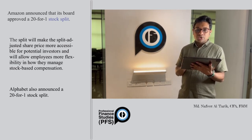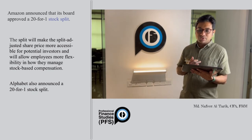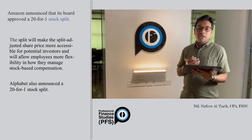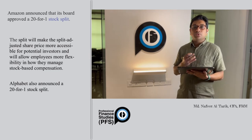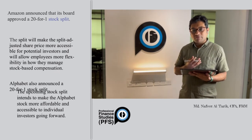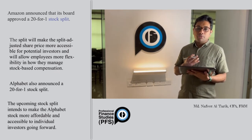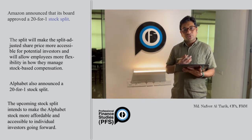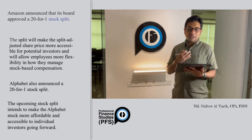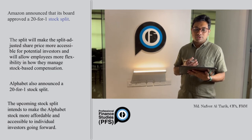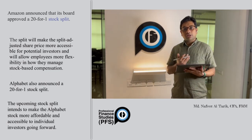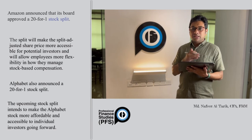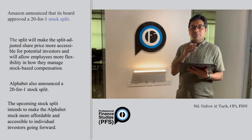Alphabet's per share stock price had increased to the $3,000 level at its peak. The company thought they needed to make shares available to more and more investors in order to increase liquidity, so they decided on a 20-for-1 stock split as well.